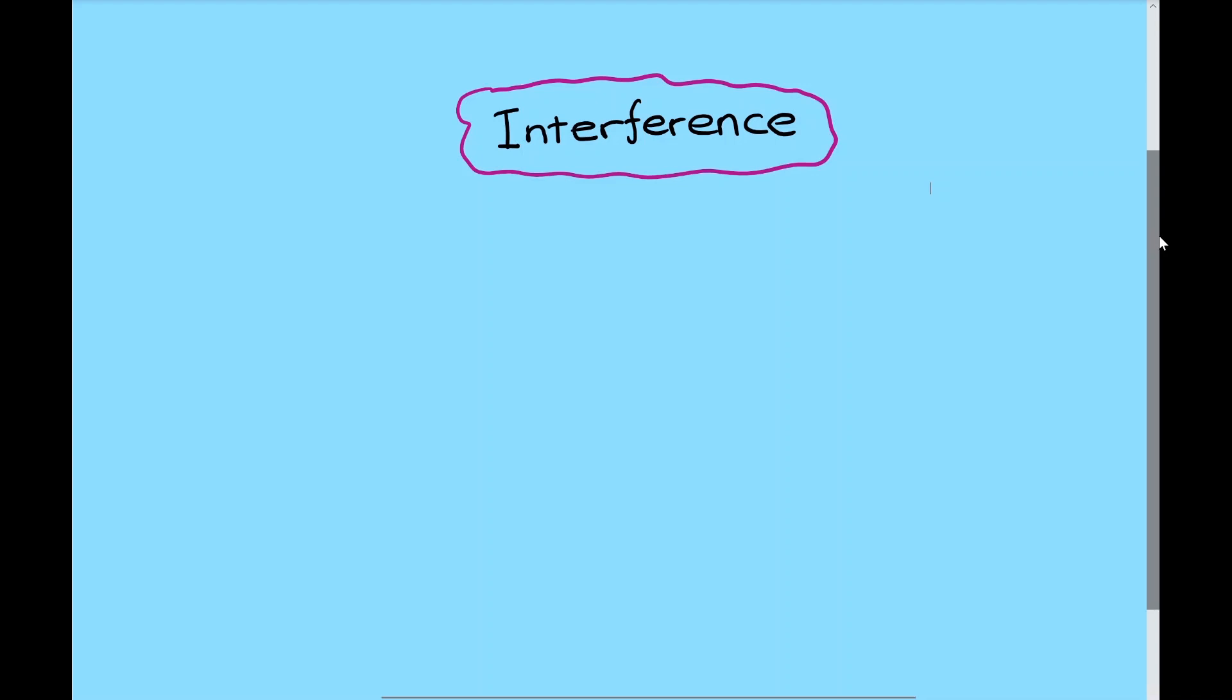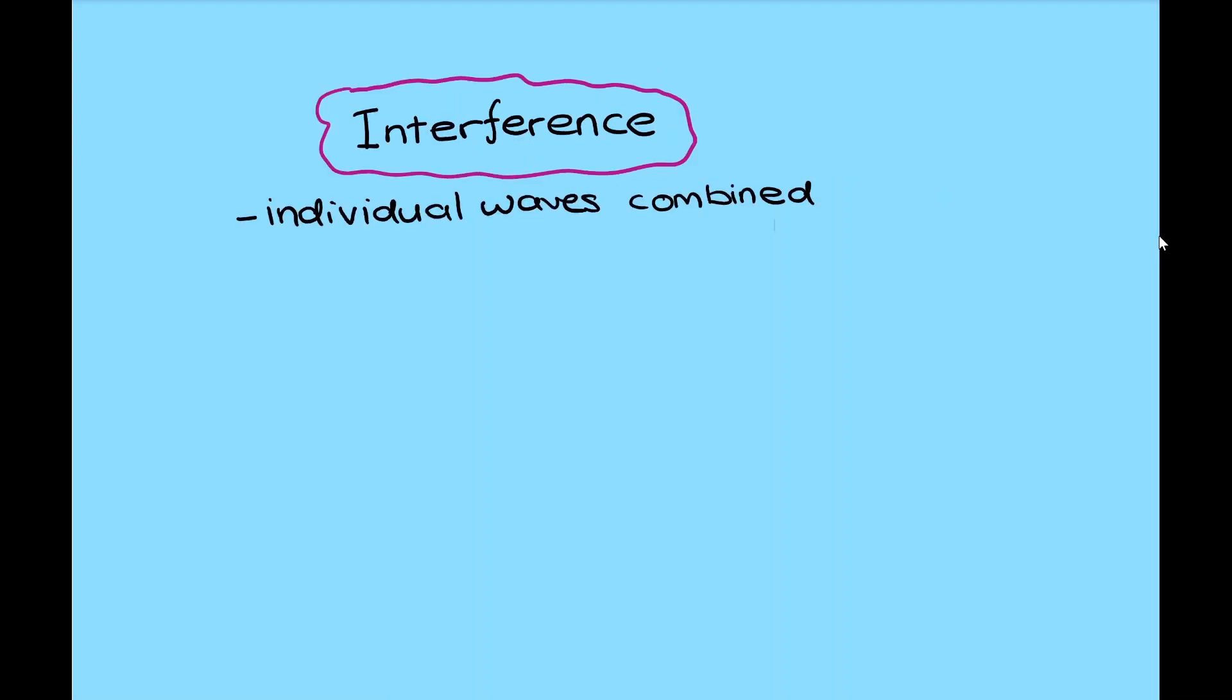Now let's have a look at the interference phenomenon as a result when individual waves combine. Two conditions need to be satisfied: the waves must be coherent, in other words they are at the same phase, as well as they are monochromatic, which means they are having the same wavelength.